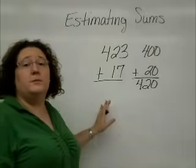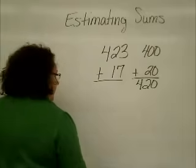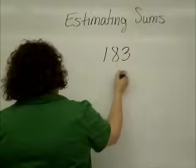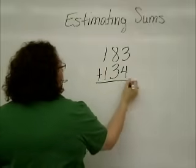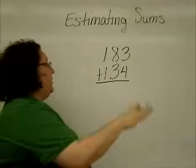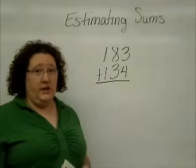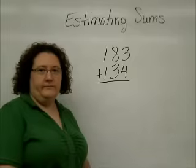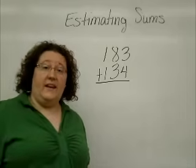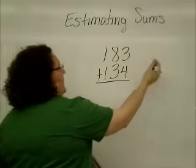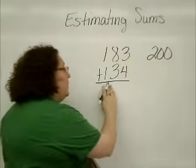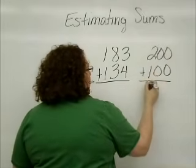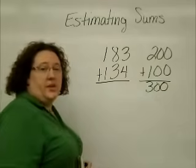Now I'm going to give you one of the problems from the workbook page to try. Let's take a look at number 9: 183 plus 134. We're going to round both of these numbers to the nearest hundred, because they're three-digit numbers. Stop the video here, give this one a try, and then come back and take a look at the answer. When we round 183, it rounds up to 200. When we round 134, it rounds down to 100. We add those two together and end up with a sum of 300.